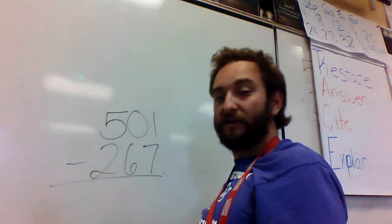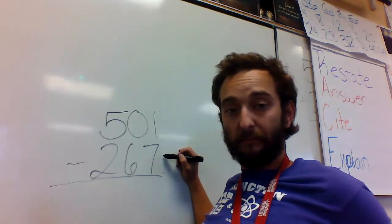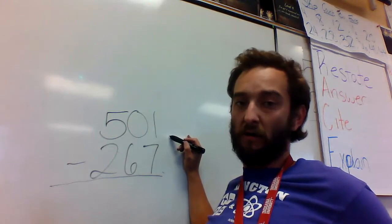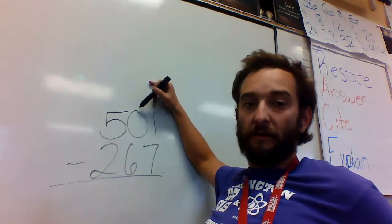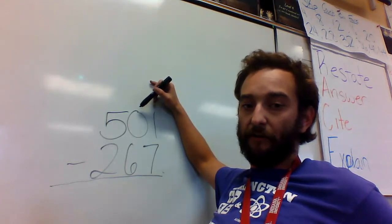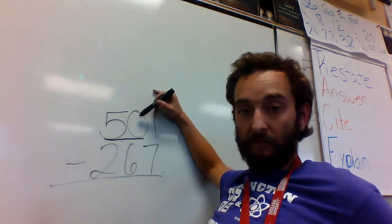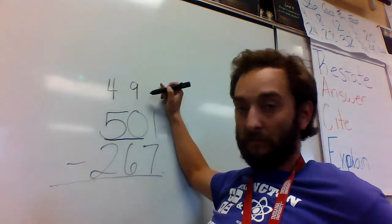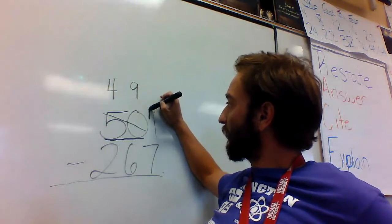501 minus 267. 7 is bigger than 1, so I must borrow. My tens spot is a 0, so now I've got to do something tricky. I can't take anything from 0, so now I'm going to take it from 50. That 50 becomes 49, and this becomes 11.